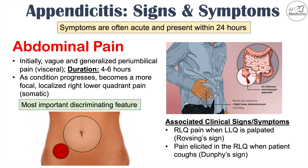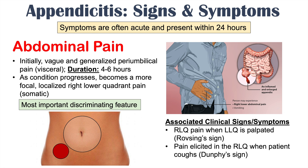There are associated clinical signs that clinicians often test for. One is right lower quadrant pain when the left lower quadrant is palpated — if the patient feels pain at McBurney's point when the clinician pushes on the left lower quadrant, that is known as Rovsing's sign, suggestive of peritoneal irritation. Another sign is pain elicited in the right lower quadrant at McBurney's point when the patient coughs, known as Dunphy's sign. Most importantly, the key feature of appendicitis is this pattern of periumbilical pain migrating to focal, localized right lower quadrant pain.